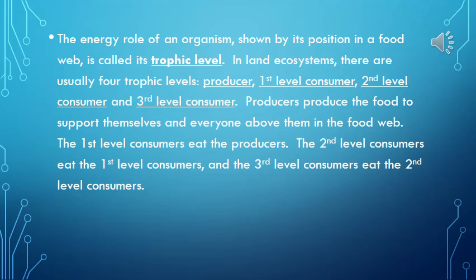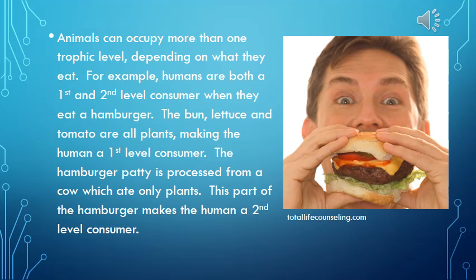In land ecosystems, there are usually four trophic levels: producer, first-level consumer, second-level consumer, and third-level consumer. Producers produce the food to support themselves and everyone above them in the food web. First-level consumers eat the producers, second-level consumers eat the first-level consumers, and third-level consumers eat the second-level consumers. Animals can occupy more than one trophic level depending on what they eat. For example, humans are both a first- and second-level consumer when they eat a hamburger. The bun, lettuce, and tomato are all plants, making the human a first-level consumer. The hamburger patty is processed from a cow, which ate only plants, making the human a second-level consumer.